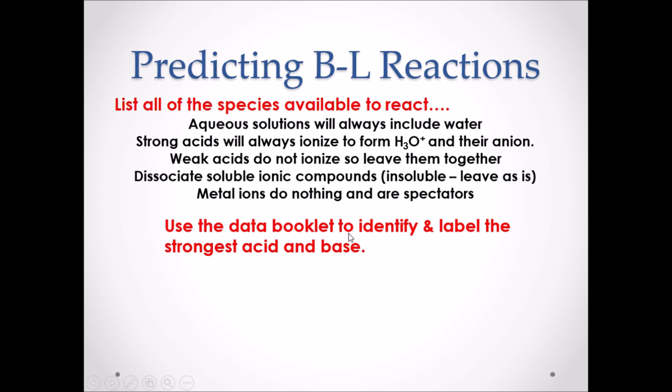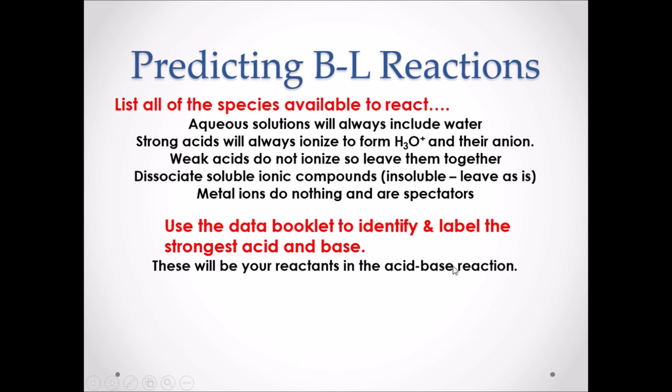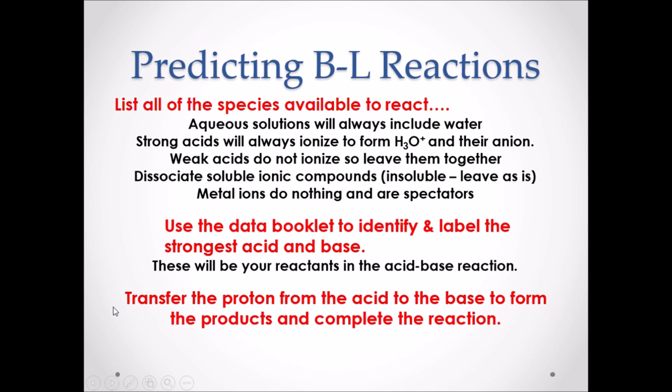Step number two: using our data booklet, from the list of species in step one, we have to identify and label the strongest acid and the strongest base. These will be your reactants in the acid-base reaction. Once we have our reactants, we can move on to step three and transfer the proton from the acid to the base to form the products and complete the reaction.